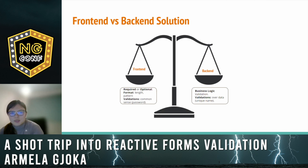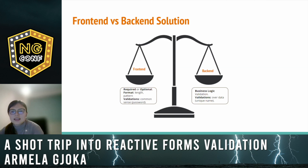From my experience, the frontend will be managing required or optional fields, format validations such as length or a pattern match, and some other validations that make sense to the user — such as password and confirmed password should have the same value. On the other hand, the backend will be managing the business logic validations and all the other validations that require some data to determine if a value is valid or not, such as: is a name unique? We need some data from the backend. By managing validations this way, we make sure that the scale is balanced.